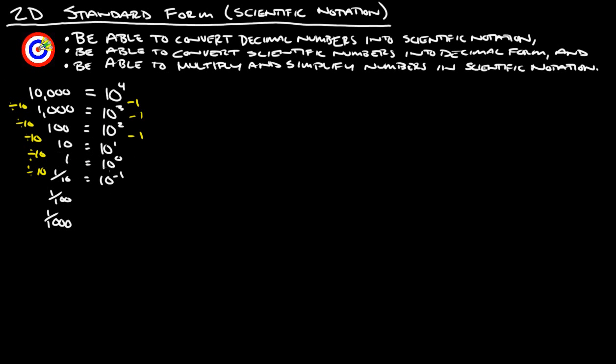So 10, 1 is the same thing as 10 to the zero, 1 tenth is 10 to the negative first, 1 hundredth is 10 to the negative second, and 1 thousandth is 10 to the negative third. That works by subtracting 1 from each exponent as we go down.